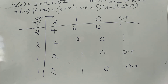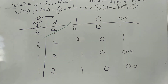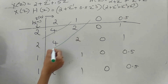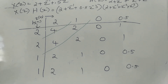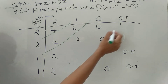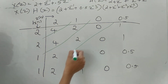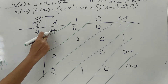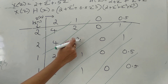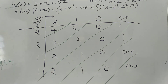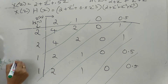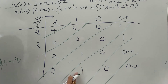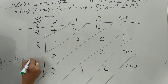Now we take the diagonal sums. The first element is 4. The second diagonal gives 4+2=6. Next diagonal: 2+2+0=4. Then: 2+3+1=6, then 3+1=4. Continuing: 1+1=2, then 0.5, and 0.5. So the output series is: 4, 6, 4, 3, 3, 4, 2, 0.5, 0.5.